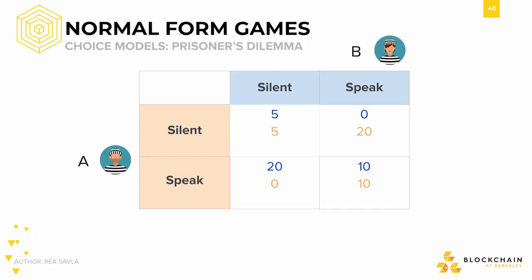Let's now take this abstract theory and implement it in a real-life situation. Suppose a situation in which there are two prisoners, prisoner A and prisoner B, who were recently detained for robbing a bank. The inspector separates the criminals into two different rooms and interrogates them. To each, he gives the choice to turn the other prisoner in or remain silent. If both prisoners remain silent, they will both suffer five years in prison. If one prisoner remains silent but the other prisoner turns them in, then the silent prisoner will bear responsibility for the whole crime and face 20 years in prison.